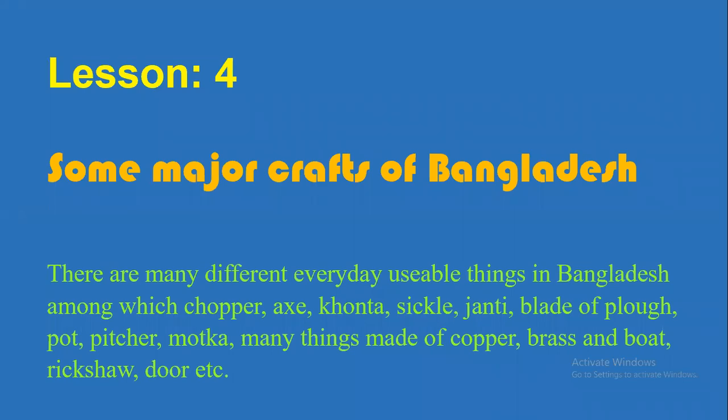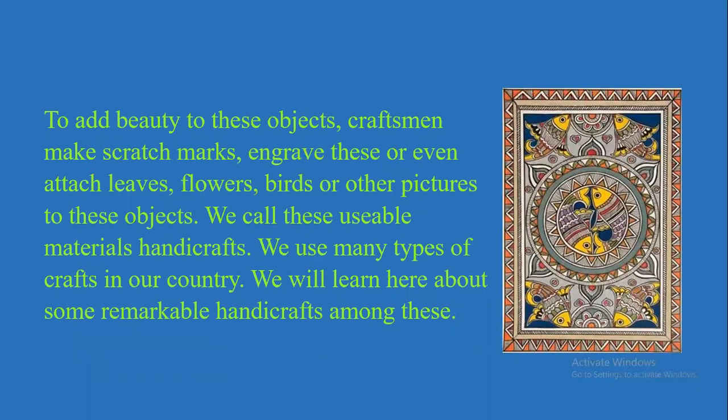Okay, my dear cadets, lesson number four: some major crafts of Bangladesh. There are many different everyday usable things in Bangladesh, among which shepherd, eggs, khanta, shikl, janti, bread, a plug, pot, pitcher, modka, and many things made of copper, brass, and board, our ratio, door, etc. To add beauty to these objects, craftsmen make marks, engrave these, or even attach leaves, flowers, birds, or other pictures to these objects. We call these usable materials handcrafts.